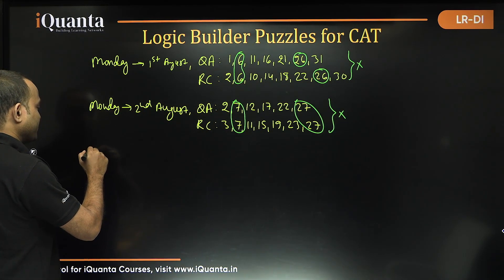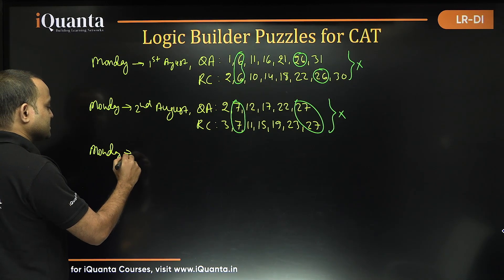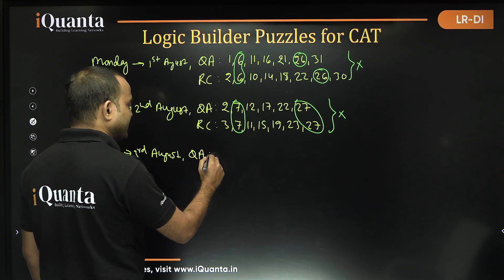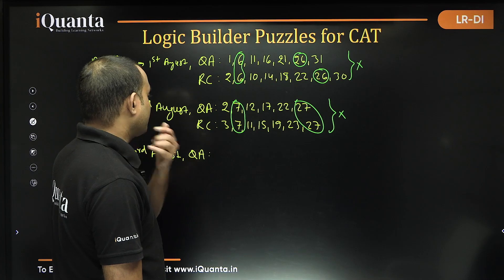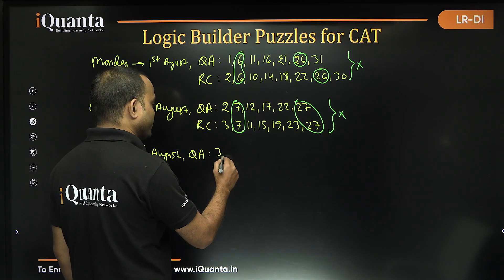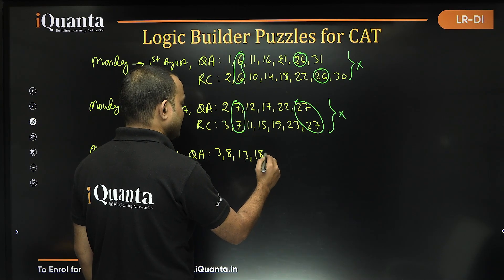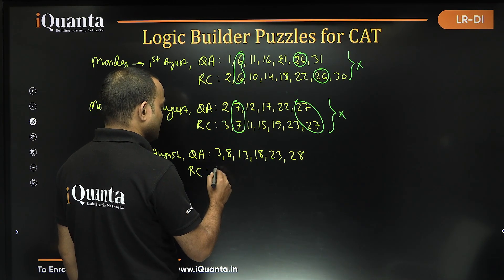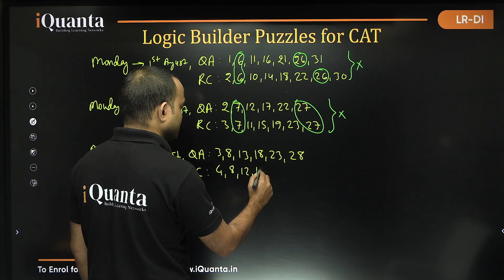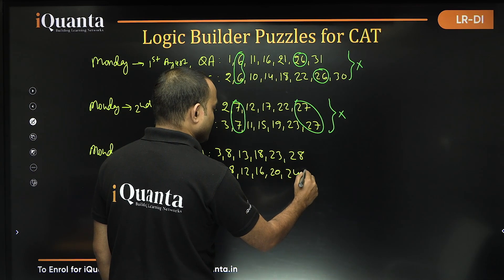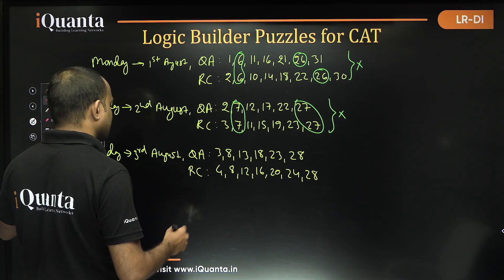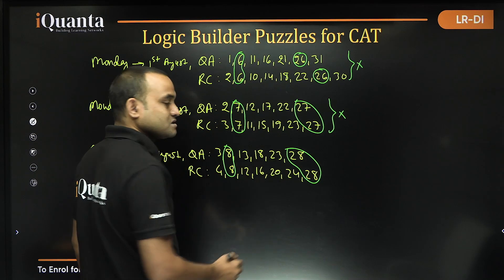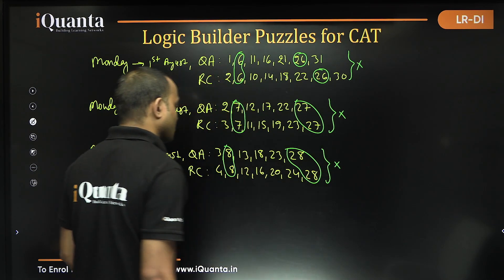Taking the third combination where Monday is on 3rd of August: QA will be taught on 3rd, 8th, 13th, 18th, 23rd, and 28th. RC will be taught on 4th, 8th, 12th, 16th, 20th, 24th, and 28th. Once again we have two common days — 8th and 28th — so this is also not valid.